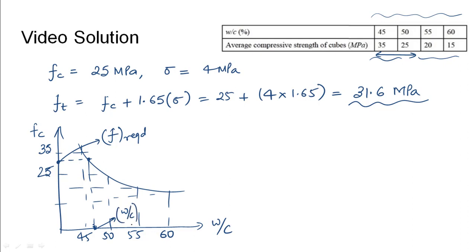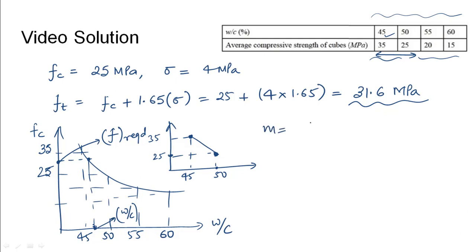The corresponding water-cement ratio for this strength value is needed for the mix. Using interpolation between the two points: the first point is a strength of 35 MPa at a water-cement ratio of 45%, and the second point is 25 MPa at a water-cement ratio of 50%. The slope of this straight line is delta compressive strength divided by delta water-cement ratio, which is (35 minus 25) divided by (50 minus 45), giving 10 divided by 5, which equals 2.